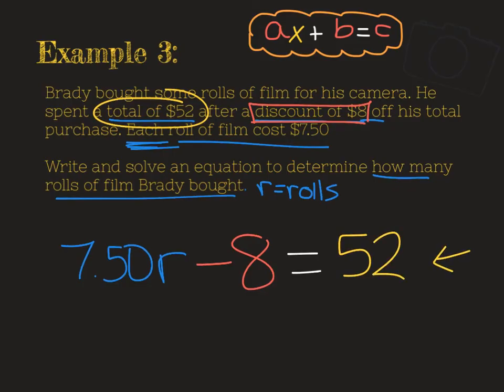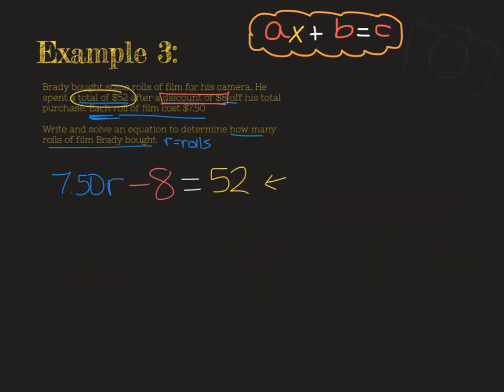So here's my equation to represent this problem in the form ax plus b equals c. And I do feel like I need to point out quickly, the variables aren't always, this isn't always going to be an x here. It just means that this is an unknown or a variable, something that changes. So don't be alarmed if you notice this isn't an x. We're still talking about some unknown. In this case, it's the rolls of film.